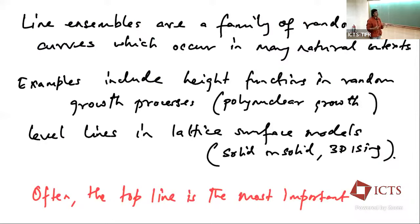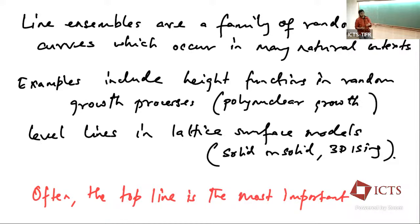Just to set the stage: line ensembles are a family of random curves which occur in many natural contexts. Some canonical examples include height functions in random growth processes such as polynuclear growth, and you can also look at some lattice surface models and look at contours, which are the boundaries of level sets of the associated height functions, such as solid-on-solid models or the three-dimensional Ising model. Although they often come as a family of curves, the top curve is usually the most important.